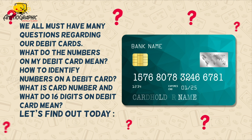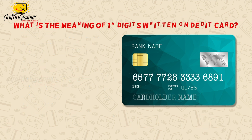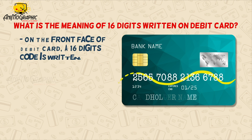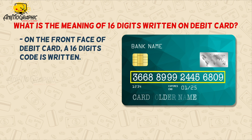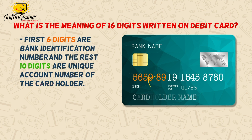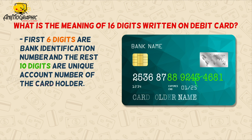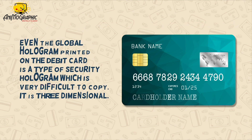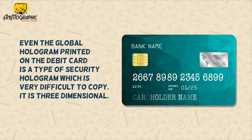Let's find out today what is the meaning of the 16 digits written on a debit card. On the front face of a debit card, a 16-digit code is written. The first six digits are the bank identification number, and the remaining 10 digits are the unique account number of the card holder. Even the global hologram printed on the debit card is a type of security hologram.